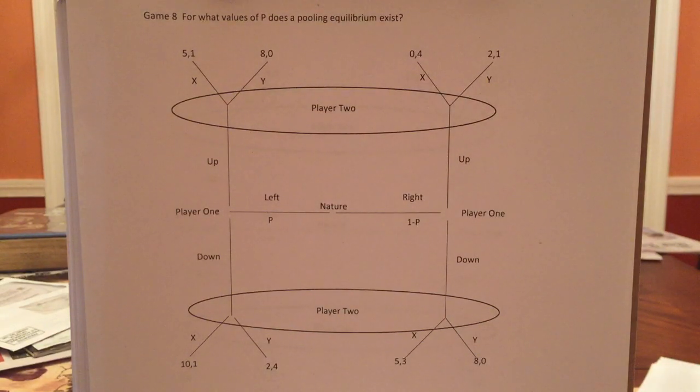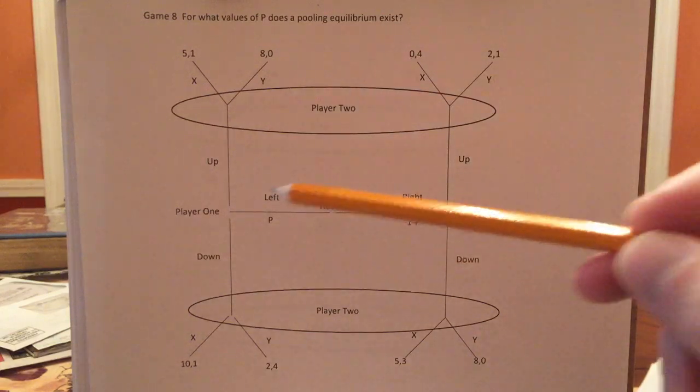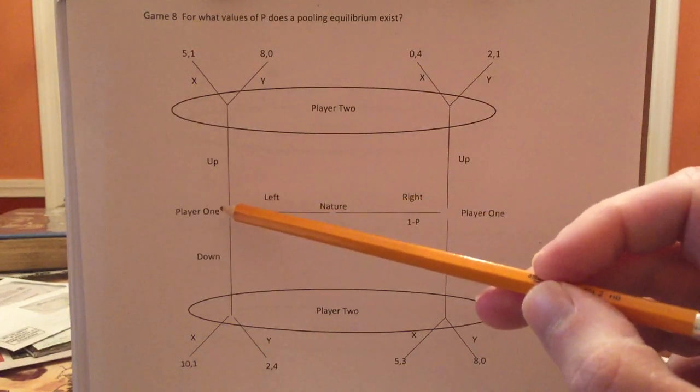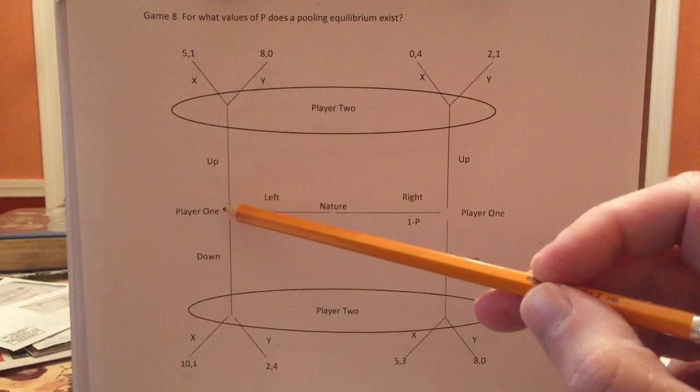As always, let's start with dominant strategies. It turns out in these games, P is not relevant for whether something's the dominant strategy. So we don't have to worry about P. Let's see. Player one's told, hey, you're a lefty. Does he have a dominant strategy?